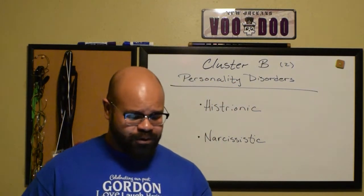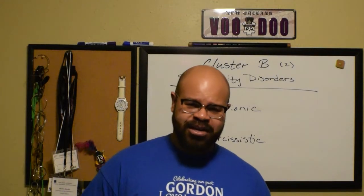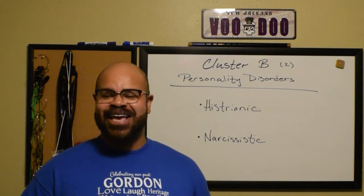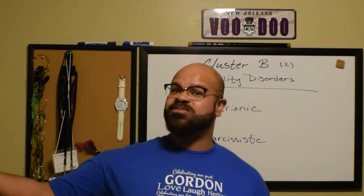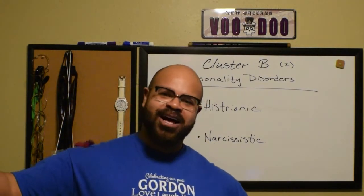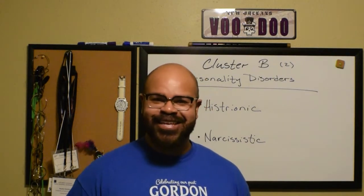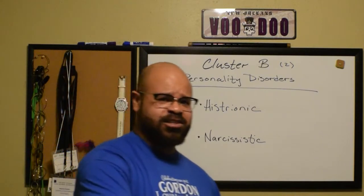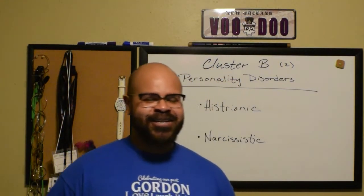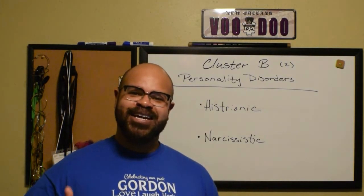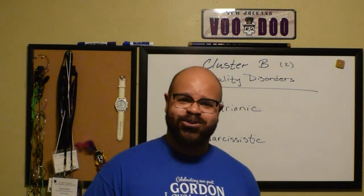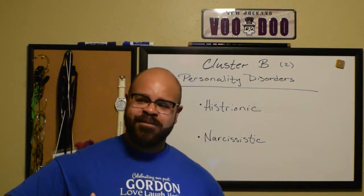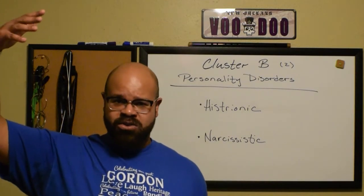Criterion six: shows self-dramatization, theatricality, and exaggerated expressions of emotion. This type tends to be really dramatic and does things in big ways — just being a drama queen in the room. Everything they do is overblown and overly expressive. Thinking of Michael Scott being overly excited and exuberant about things that others are also excited about, but he takes it to a different level so that he's still the one people are noticing and talking about.